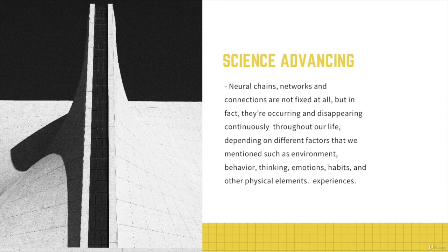What you need to know is that science showed that these neural systems and neurons themselves, which form a structure altogether, can actually change this structure based on environment, behavior, thinking, emotions, habits, and other physical elements and experiences.